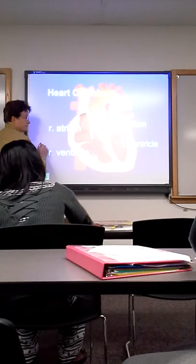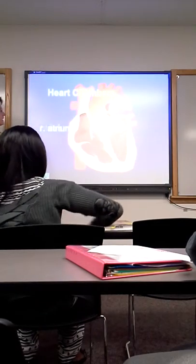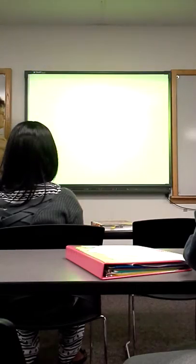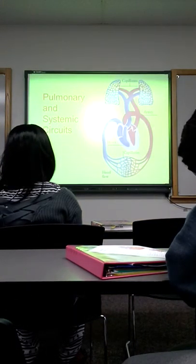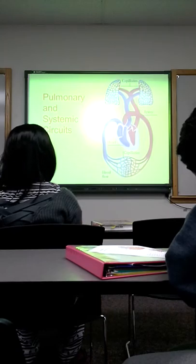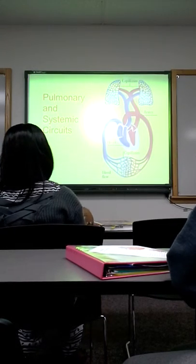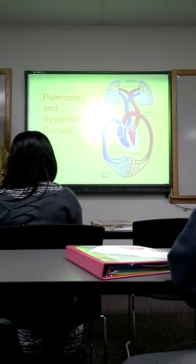When the ventricles contract, the blood then is ejected out of the heart into the arteries. The ventricles are the main pumping chambers of the heart. The atria do contract, but their contraction is not essential for the movement of blood into the ventricles. What's essential is the contraction of the ventricles. That's what moves the blood out of the heart, through the organs, and ultimately back to the heart.